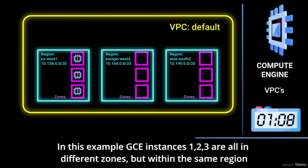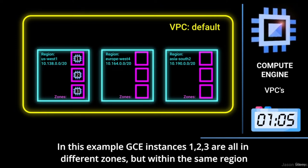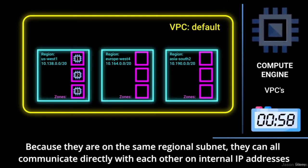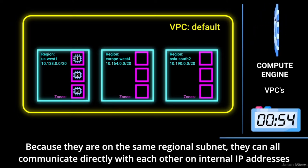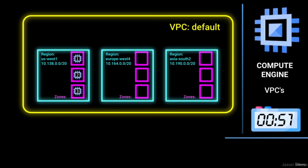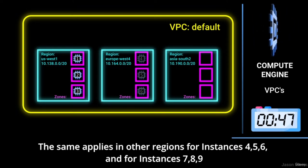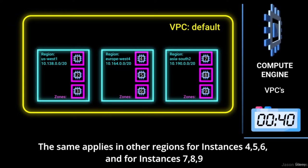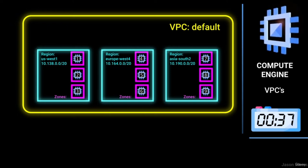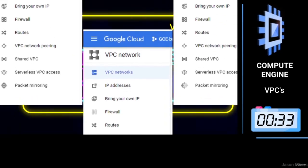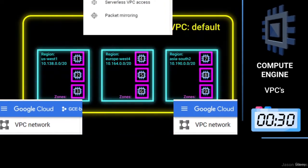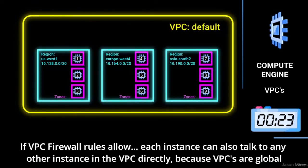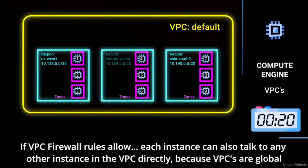In this example, GCE instances one, two and three are all in different zones, but within the same region. Because they are on the same regional subnet, they can all communicate directly with each other on internal IP addresses. The same applies in other regions for instances 4, 5 and 6, and for instances 7, 8 and 9. If VPC firewall rules allow, each instance can also talk to any other instance in the VPC directly because VPCs are global.